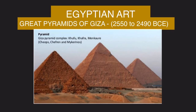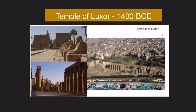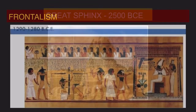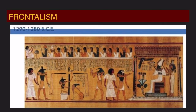Now we have Egyptian art from 3000 to 1000 BCE, which reflects religion and their belief in the afterlife. Their main artistic achievements are the pyramids of Giza, their temples, their sculptures like the Sphinx, and they used the frontalism technique in their paintings.